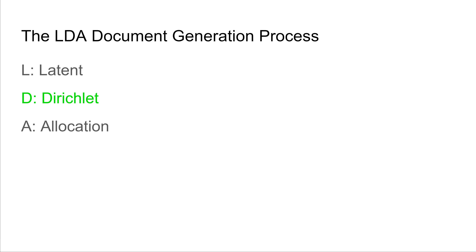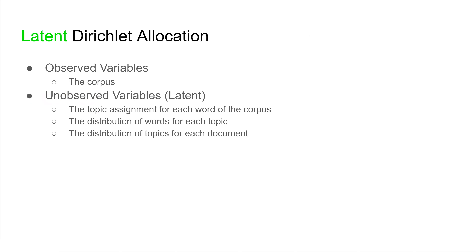LDA stands for Latent Dirichlet Allocation. We have discussed the Dirichlet part of LDA; we now discuss the latent part. In LDA, we are given a set of documents called a corpus. Each document contains a certain number of words — these words and documents are our observed data. Each word in a document is a member of a certain topic, which we cannot observe directly. Each topic has a distribution of words, and each document has a distribution of topics — both of which we also cannot observe. These are the latent variables, which we use inference to estimate.